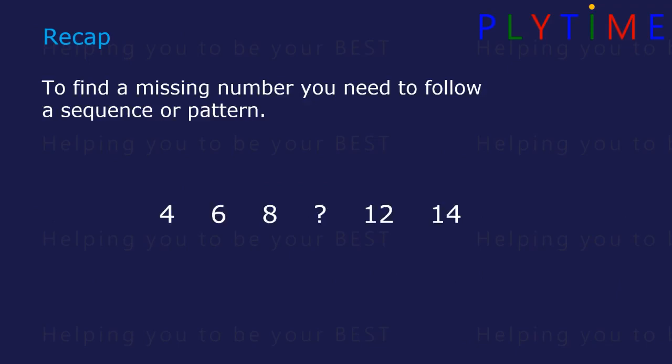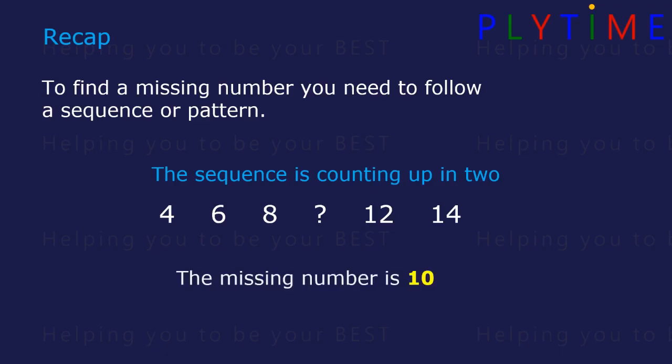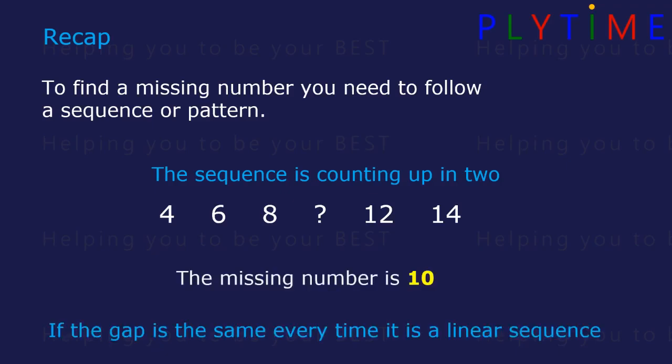For example: 4, 6, 8, something, 12, 14. The sequence is counting up in 2s and the missing number is 10. If the gap is the same every time, it's a linear sequence.